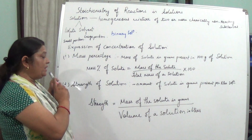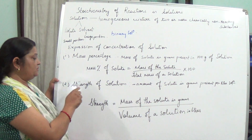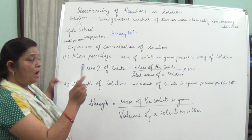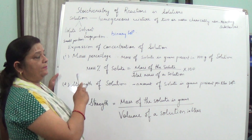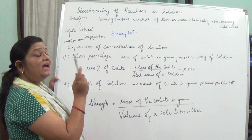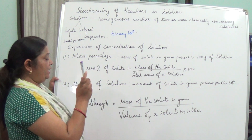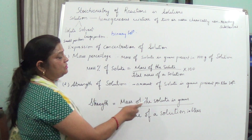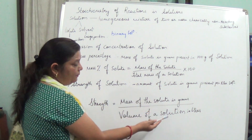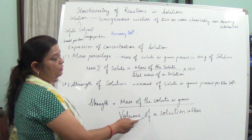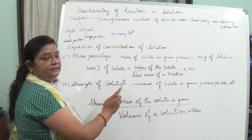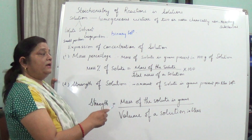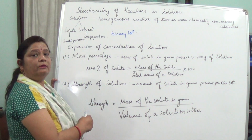Next is the strength of solution. This is needed in titration. Strength of solution is the amount of solute in grams present per liter of solution. The formula becomes: mass of the solute in grams upon volume of solution in liters. All these formulas will be used in calculating while doing the numericals.